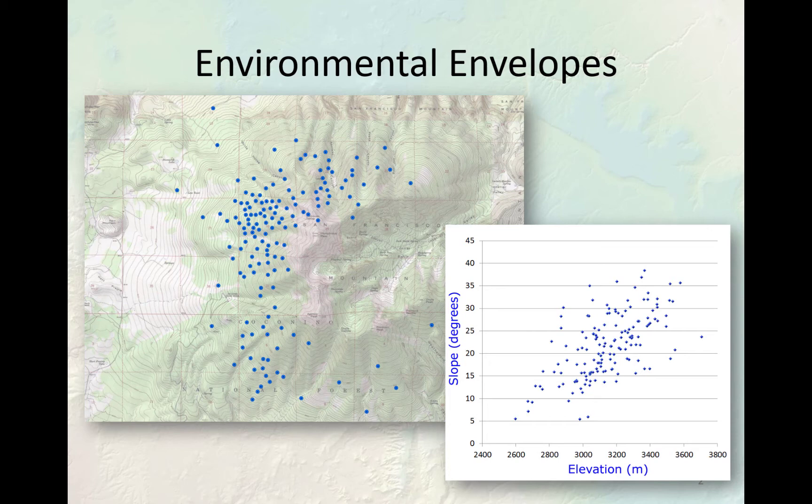First off, environmental envelopes. These are a landscape-level approach where we're identifying where an entire species prefers, based on the habitat preferences the species has and based on where that habitat exists on the landscape. This method has a fancy name, but it's actually a very simple and intuitive method. In fact, if you had the job of inventing a method to identify where an animal prefers, this is probably the first one you'd think of. It's that clear.